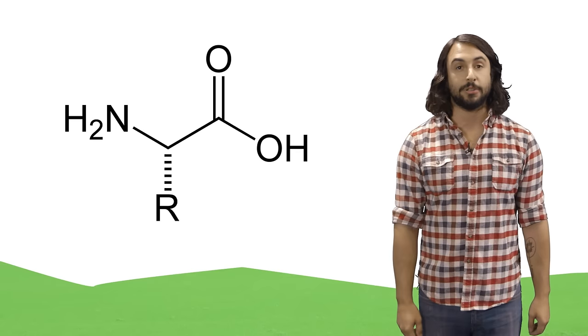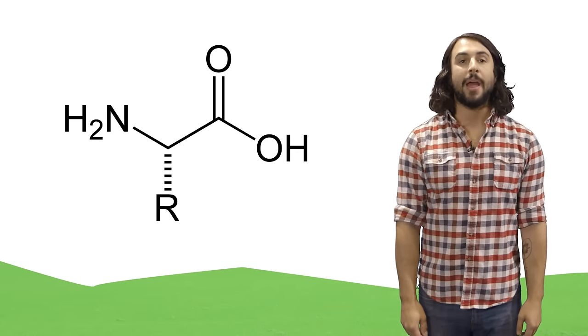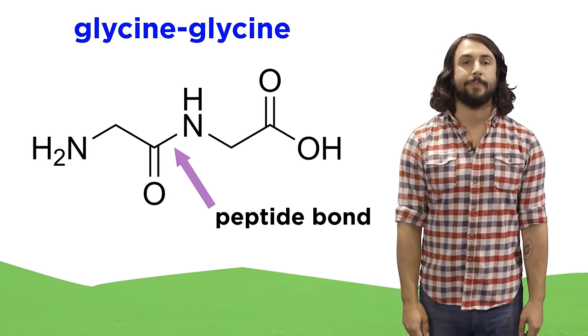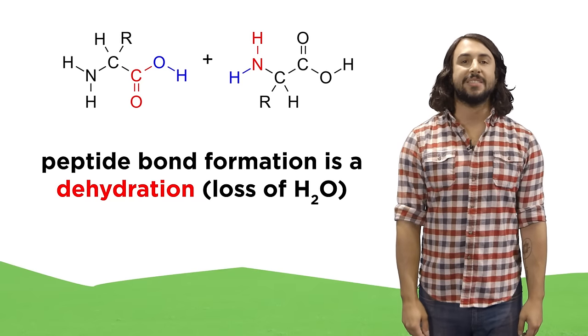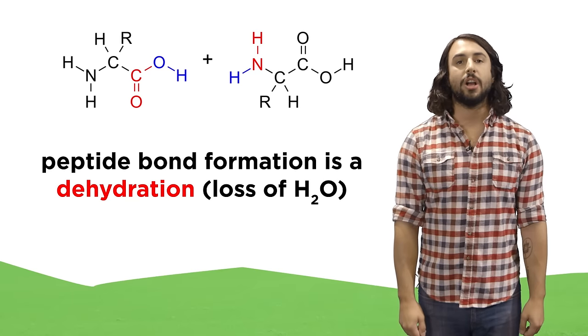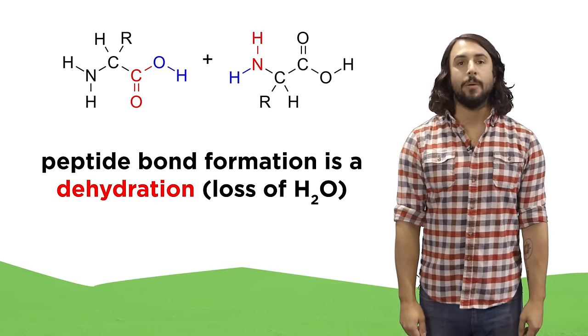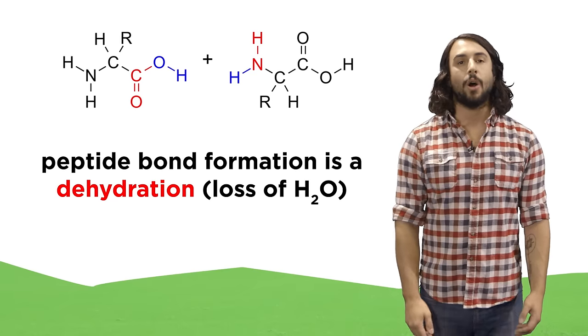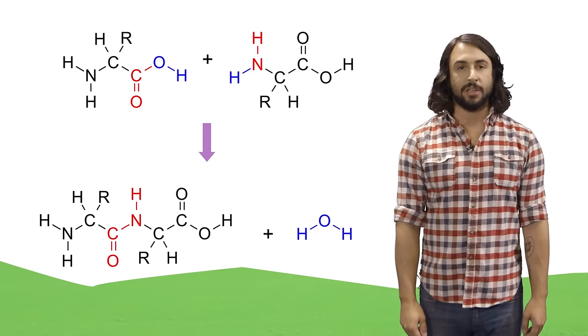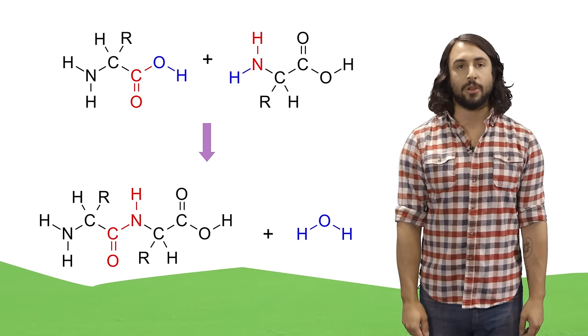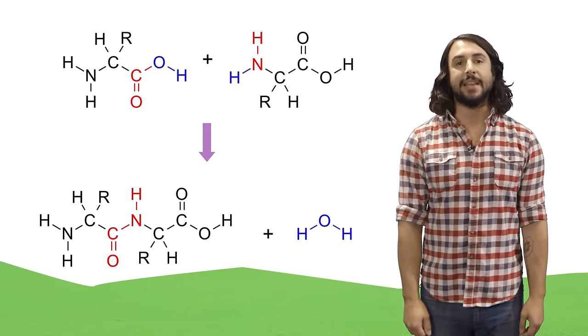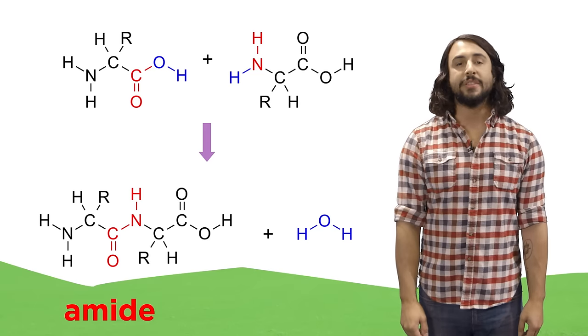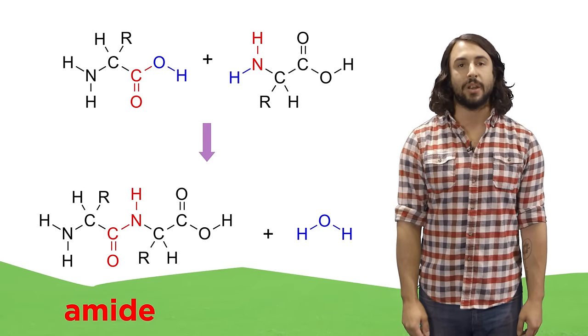So how do amino acids polymerize? This happens when amino acids form peptide bonds with one another, such as the peptide bond between these two glycine units. Peptide bond formation is an example of a dehydration reaction, because the two hydrogens and the oxygen marked in blue are lost, and two hydrogens plus one oxygen equals a water molecule. So as a water molecule is lost, these two amino acids come together to form a peptide bond, which results in an amide. An amide is a functional group with a nitrogen atom next to a carbonyl and this is the functional group that will connect each amino acid during polymerization.